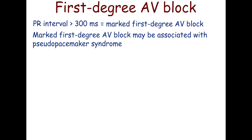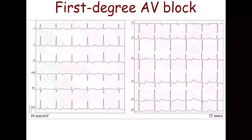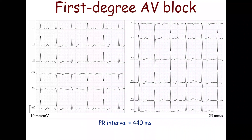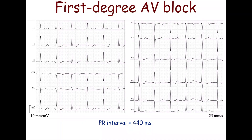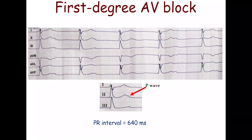Marked first-degree block can lead to pseudopacemaker syndrome, which is characterized by significant asynchrony between atrial and ventricular contractions, resulting in retrograde blood ejection from the atria. This ECG shows an extremely prolonged PR interval of 440 ms, where the P waves merge with the T waves of the previous complex. Another ECG demonstrates a PR interval of 640 ms.